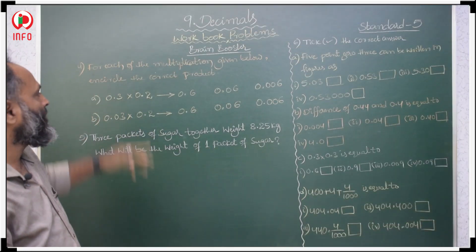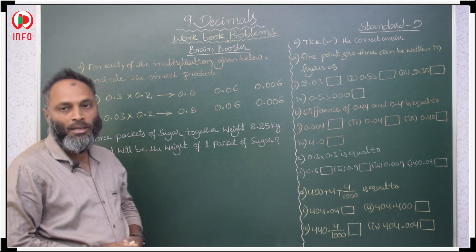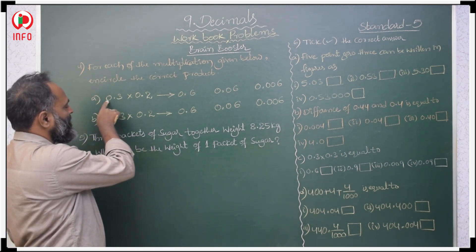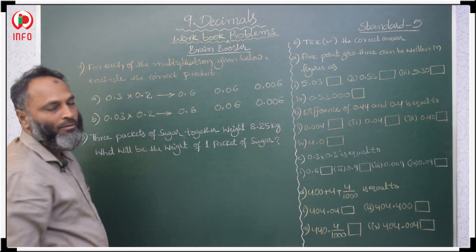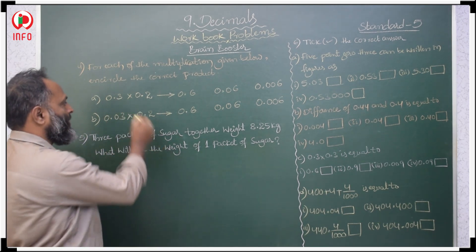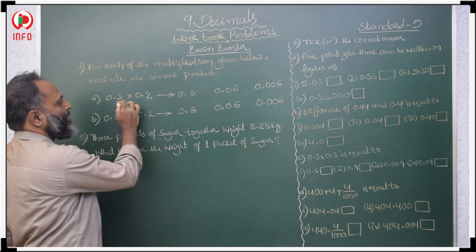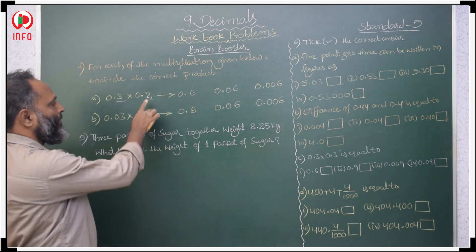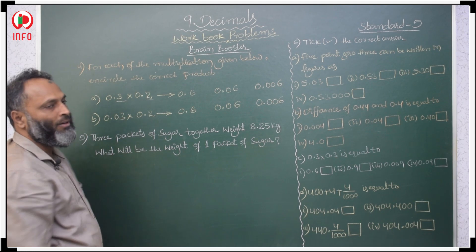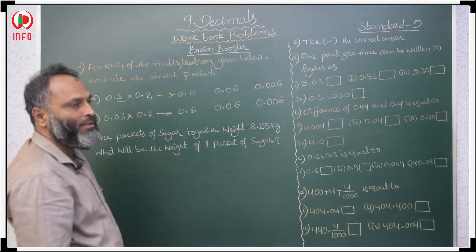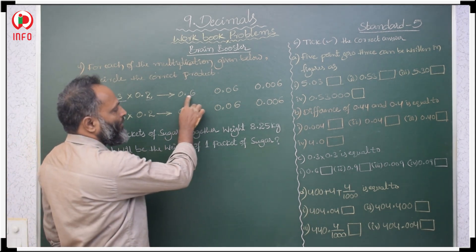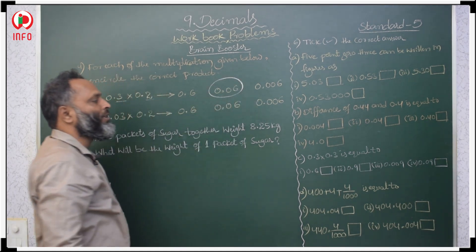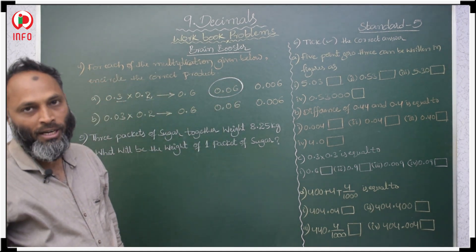For each multiplication below, circle the correct product. The first: 0.3 times 0.2. Multiply 3 times 2 is 6. After 1 digit and after 1 digit, total 2 digits after decimal. So 0.06 is the correct answer.